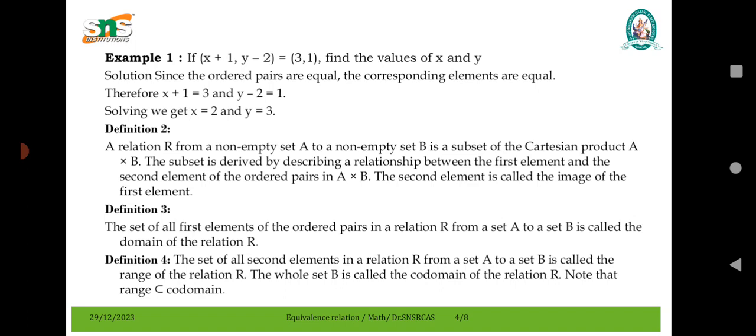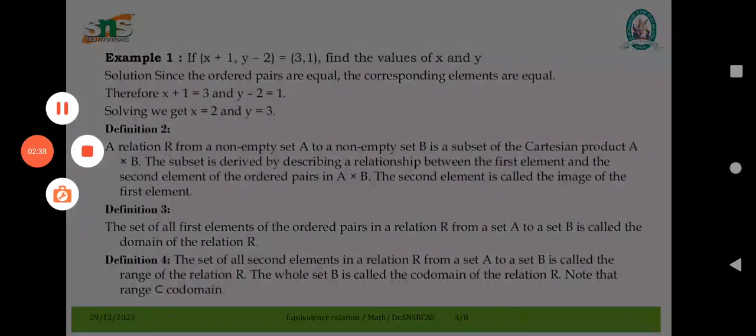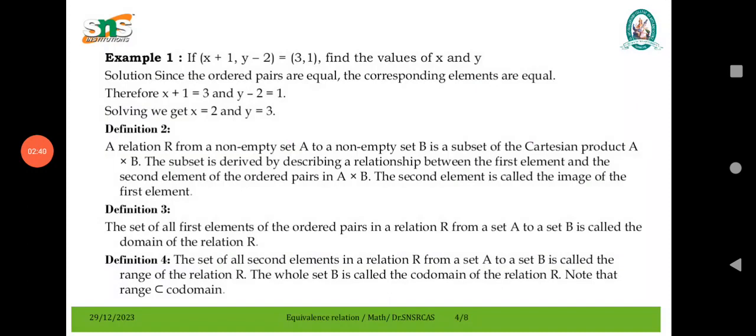Definition 2: A relation capital R from non-empty set A to a non-empty set B is a subset of the Cartesian product A cross B. The subset is derived by describing a relationship between A and B. The second element is called the image of the first element.